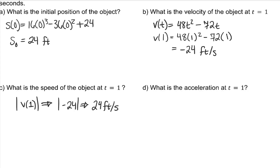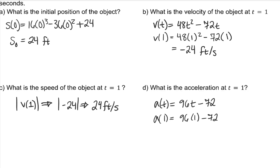What is the acceleration at t equals 1? Acceleration is the derivative of the velocity function. Plugging in 1, the answer is 24 feet per second per second, or feet per second squared.